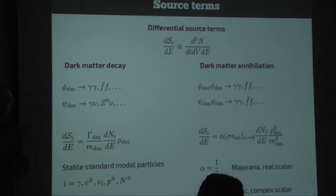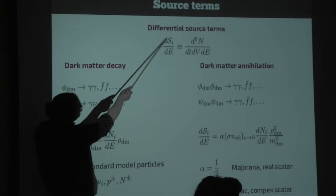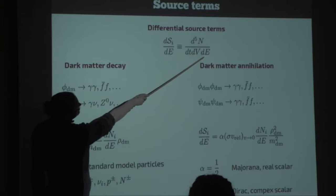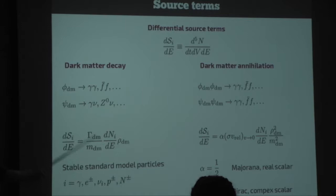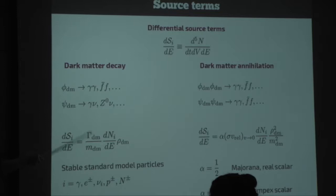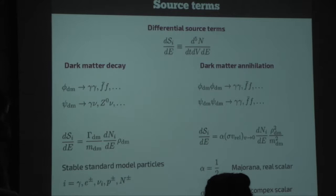Let's start at the beginning: the source term. What we are looking for is basically an anomalous energy injection related to dark matter. This is the differential source term — basically the number of whatever particles emitted per time interval, per volume element, and per energy range. In the case of dark matter decay, the differential source term would look like this: it's just the decay rate divided by the mass times the dark matter energy density. This gives the number density and then the energy spectrum of particles produced in this process. This can be all stable particles ultimately — photons, electrons, positrons, neutrinos, protons, anti-protons, and heavier nuclei.